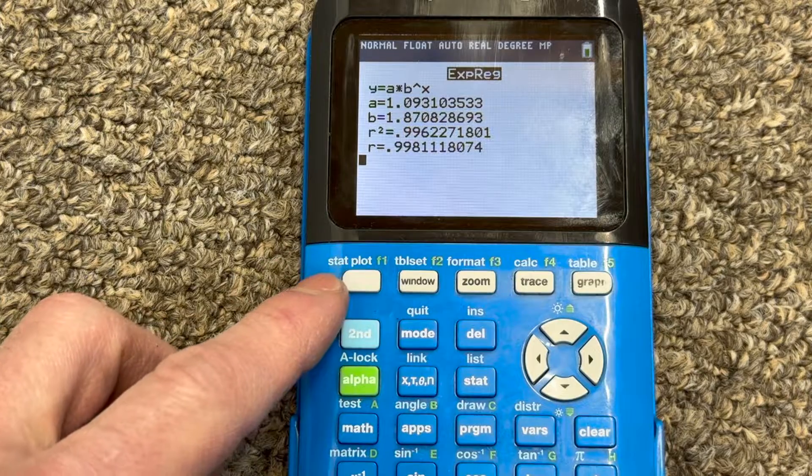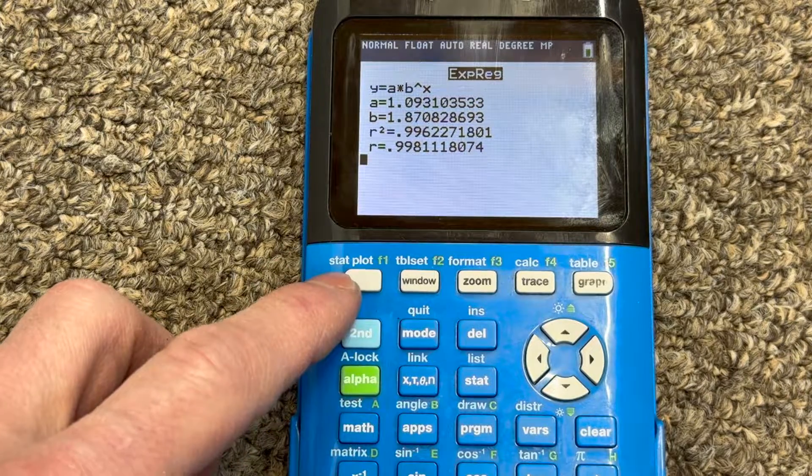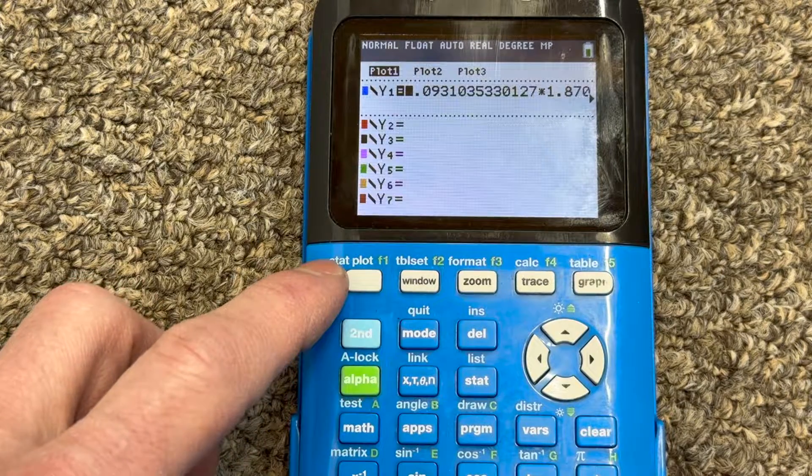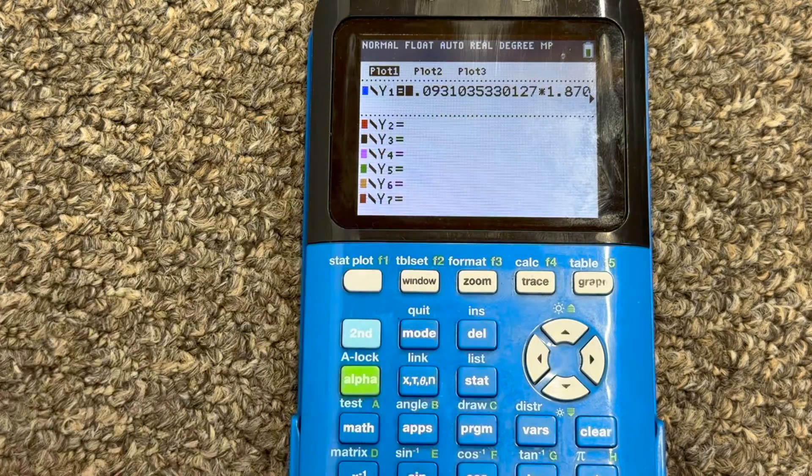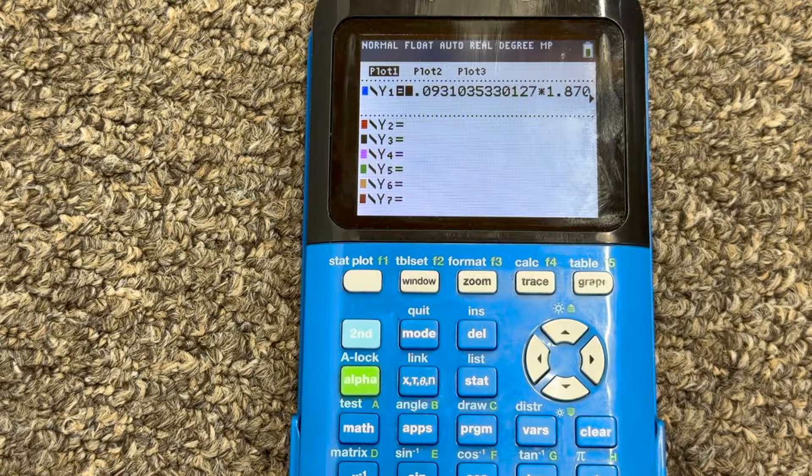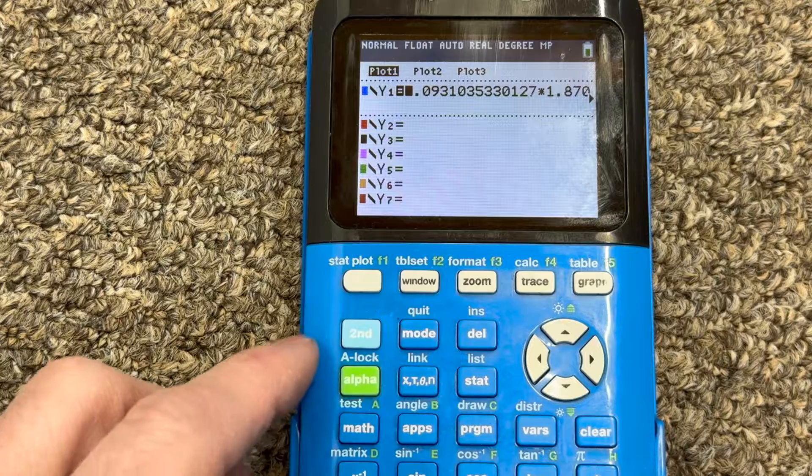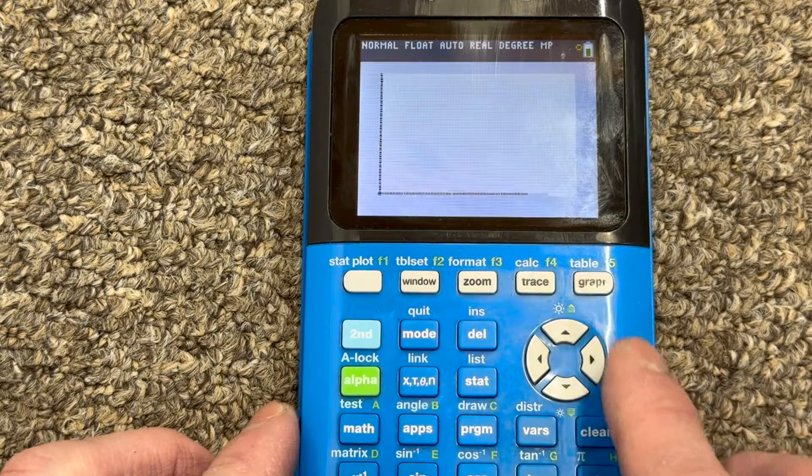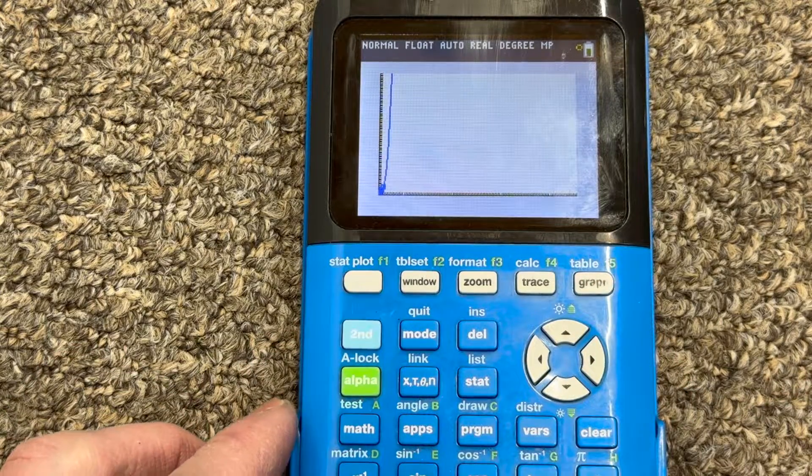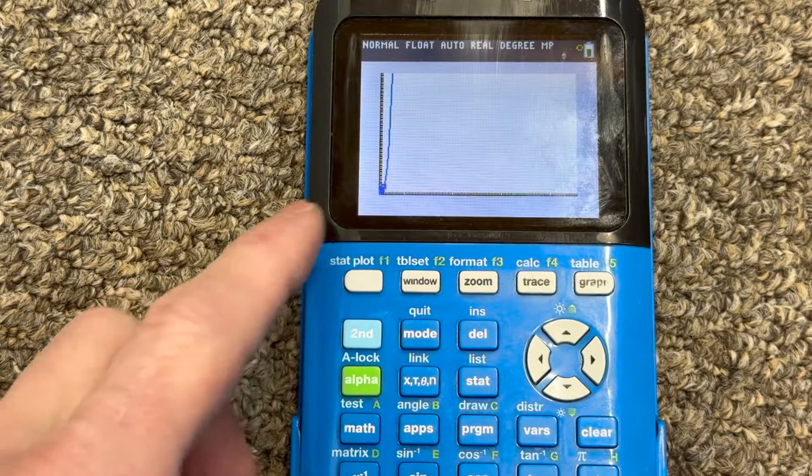Now if you go over here to where it says Y equals, mine's worn out a little bit here, so Y equals, see, it inputted that equation in there for you. So now that's in there, and if you want to go to graph it, upper right-hand corner graph, you'll see those data points and then the graph.